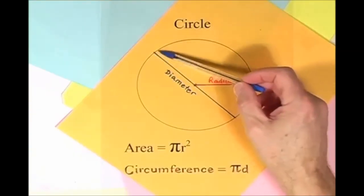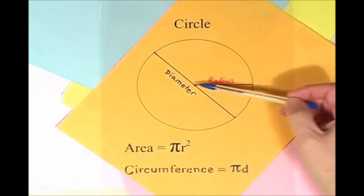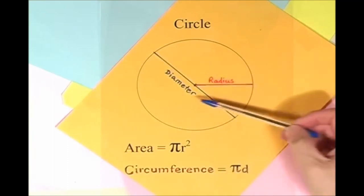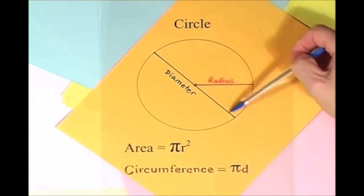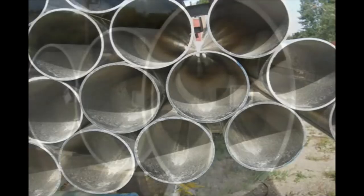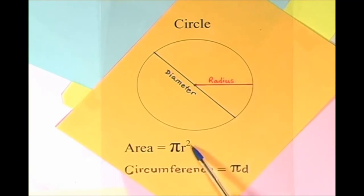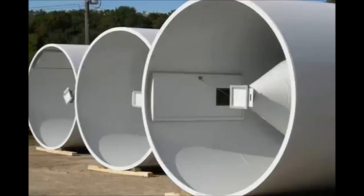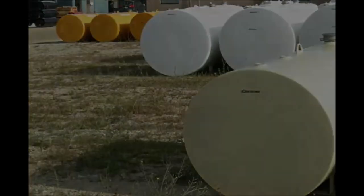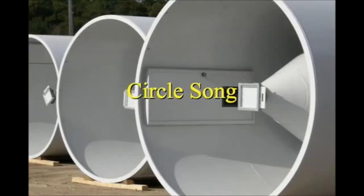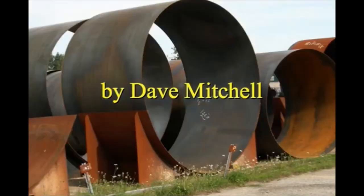Here is a circle, it knows how to get around. It has a radius from center to rim. And its diameter's a line that goes from side to side while passing through the center, now isn't that simple. Pi r squared sounds like area to me, when I need a circumference, I'll just use pi d. Pi r squared sounds like area to me.